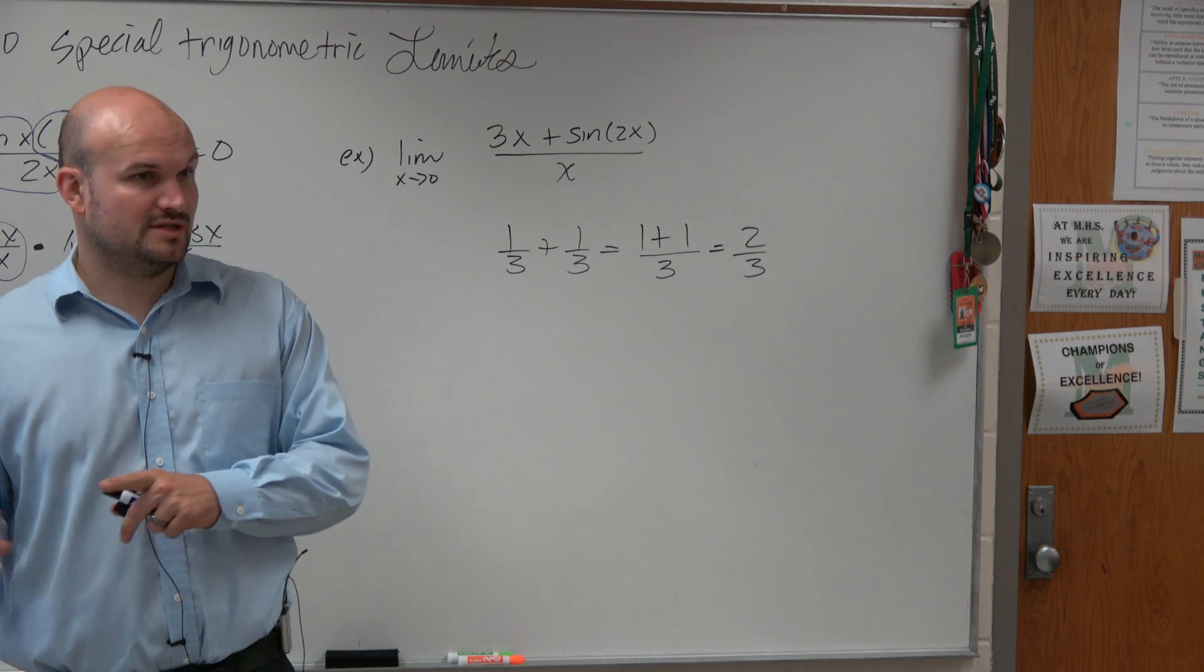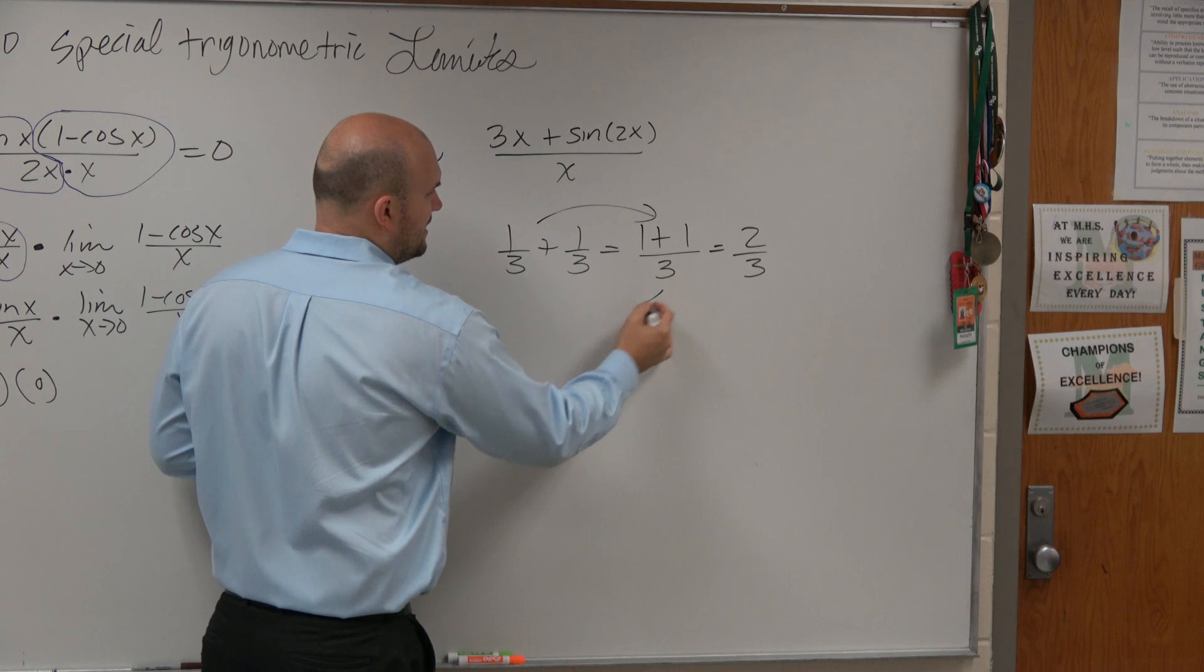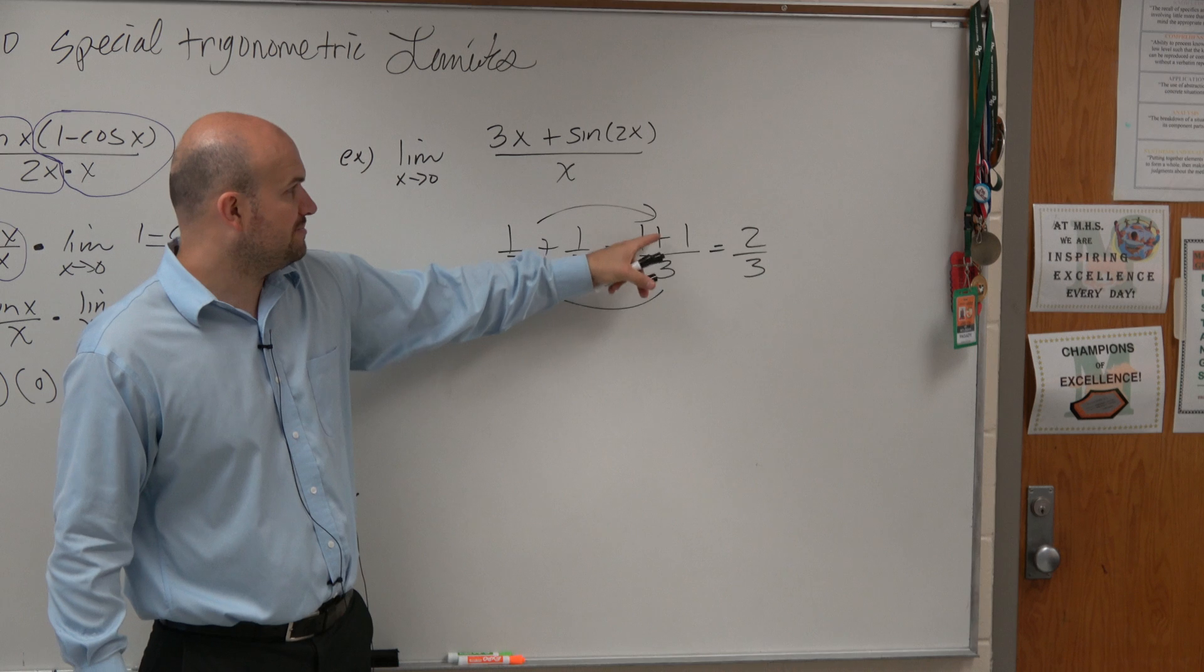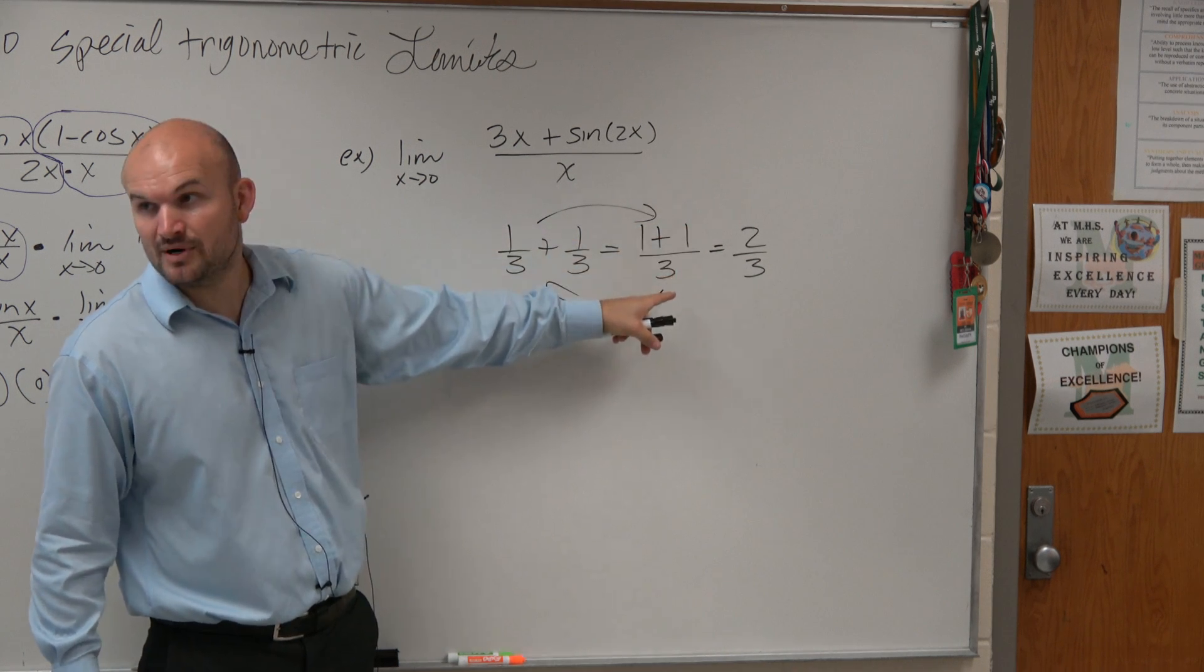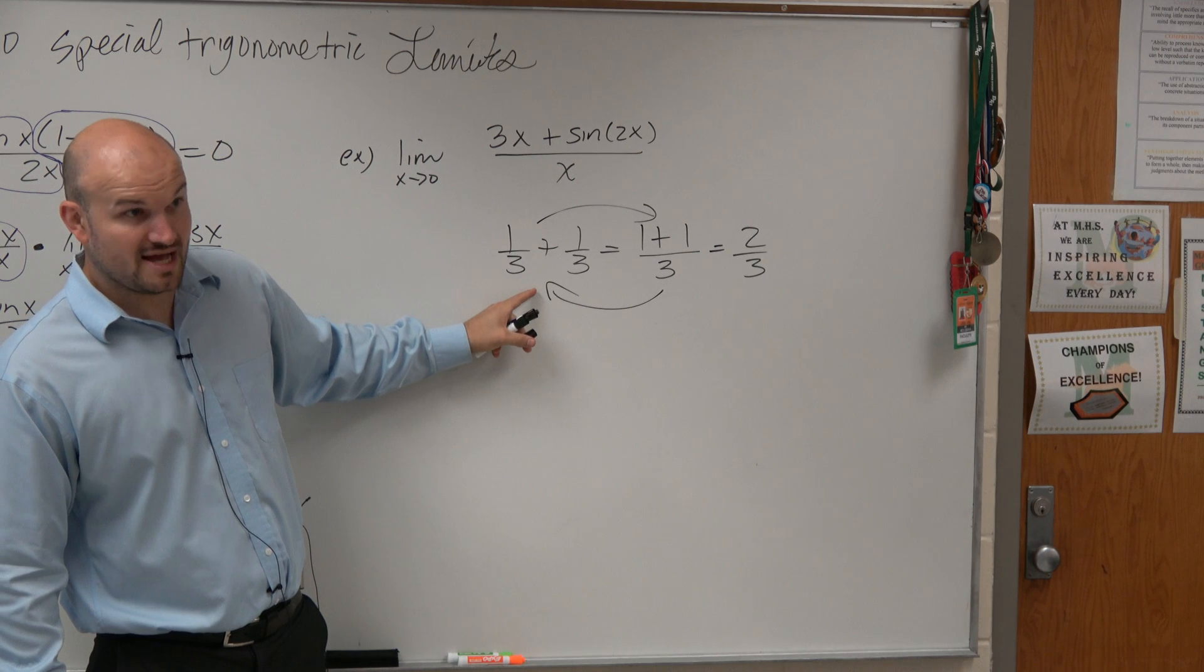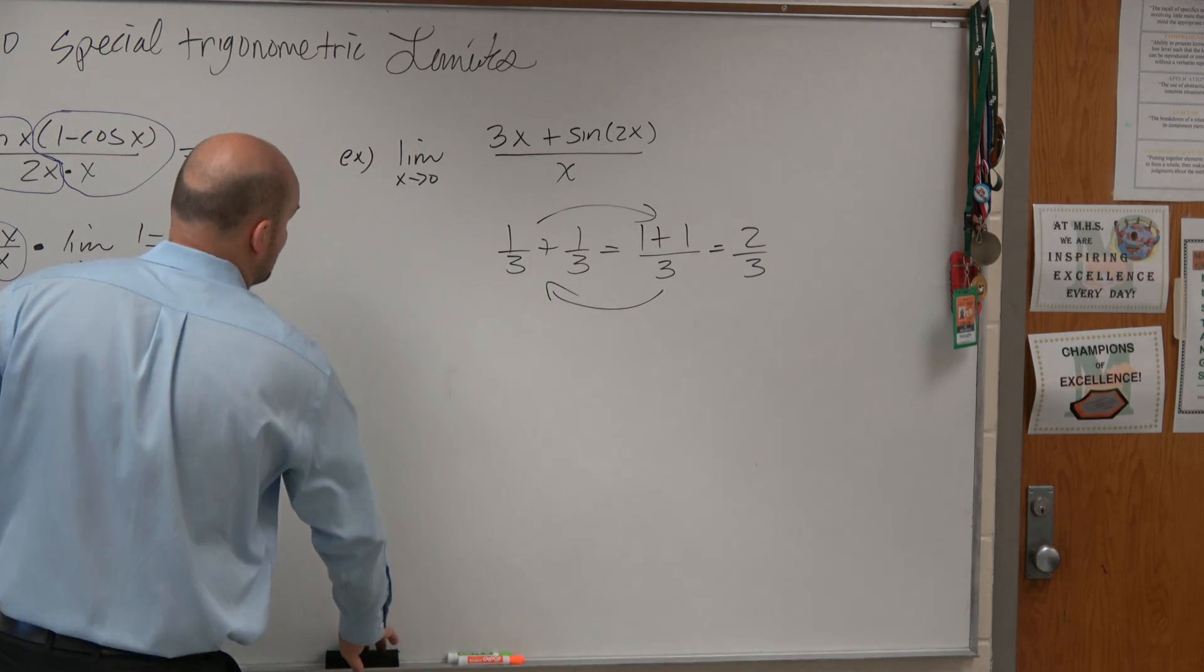So let me ask you a question then. If you went from here to here, is it okay to go from there to there? If I give you some expression, something plus something else, divided by a number, can you rewrite it as two different fractions? Yes, there's nothing mathematically wrong with that. That's mathematically equivalent expressions.